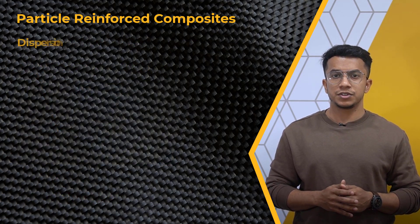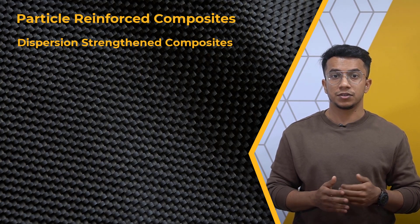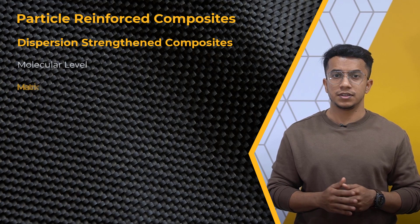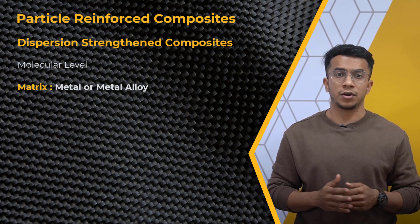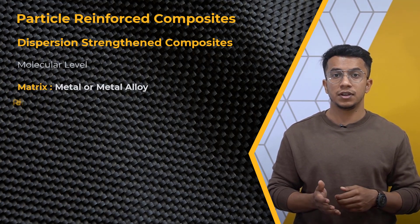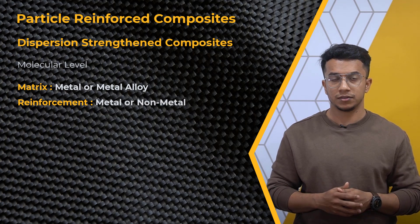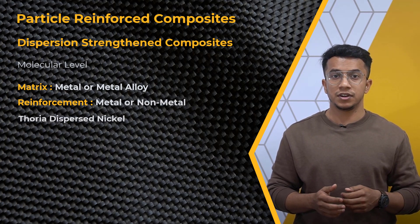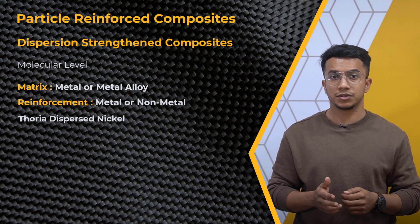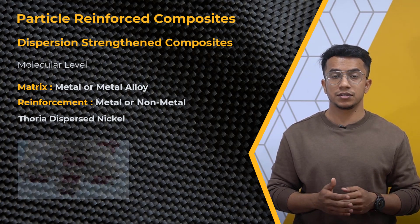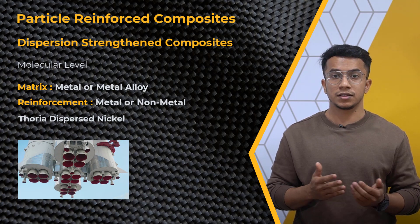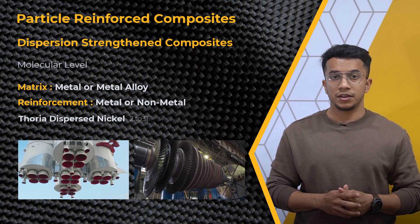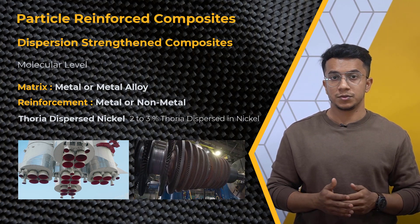In dispersion strengthened composites, the phase interactions occur at the molecular level. The matrix phase is either metal or metal alloy, and the dispersed phase is either metal or nonmetal. Thoria dispersed nickel, which exhibits relatively high physical strength at increased temperatures and finds applications in rocket nozzles and gas turbines, is one such composite. It has two to three percent thoria dispersed in nickel.